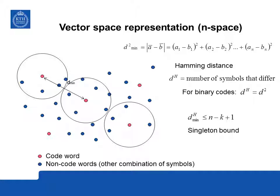How large can D_min be for a code? It depends on the number of check symbols, and a simple upper bound is given by the singleton bound: D_min must be less than or equal to n minus k plus 1, where n minus k is the number of check symbols.